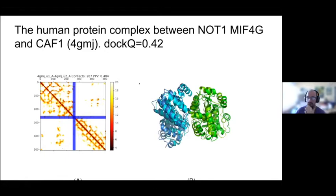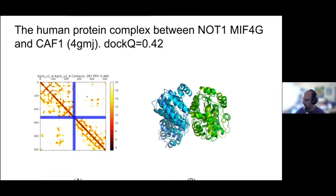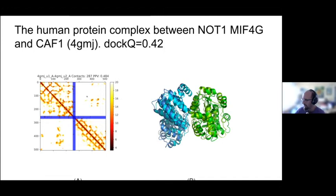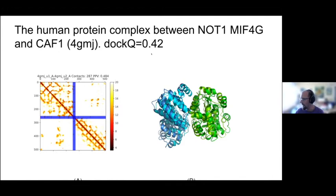At least some proteins work well. One human protein interaction between NOT-1 and CAP-1 shows quite accurate predictions — we have almost 300 contact predictions, about half correct, but you can really see the correct pattern. The resulting models are quite good: both individual chains look right, and the DockQ score is 0.42, which is quite good. There are some loops that are not perfect and the interface is not perfect, but it's in the right place.